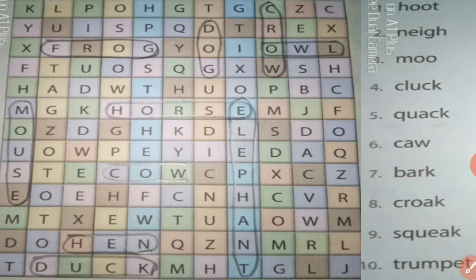Question number 6, caw. D-O-G, dog. Question number 8, croak. Which animal will make a sound croak? Yes, it is frog. F-R-O-G, frog.